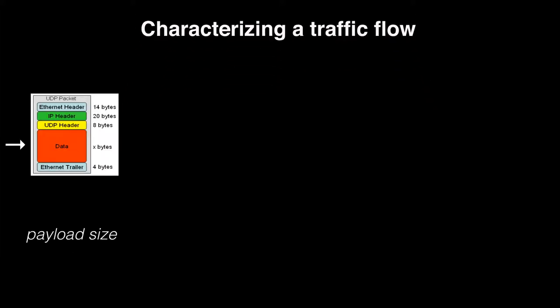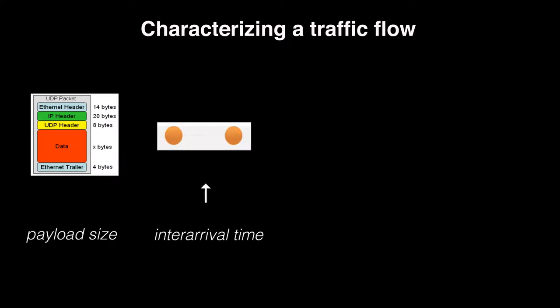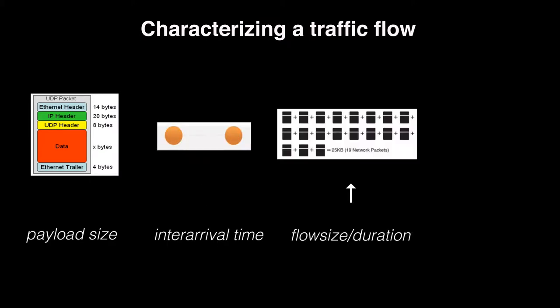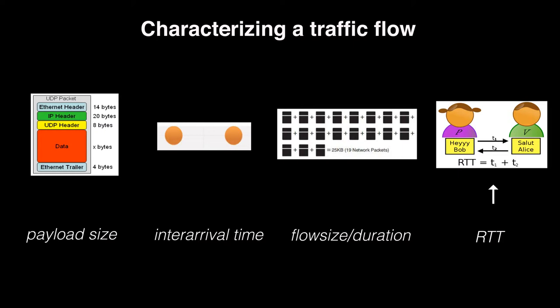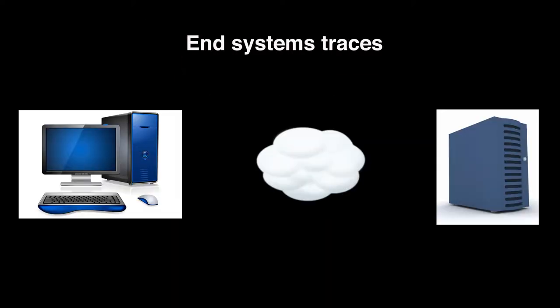Characterizing a traffic flow can be done in different ways. We use payload size, packet inter-arrival time, flow size, and duration for describing stream properties, while RTT is used to estimate connection response time. A simple way to study an application's traffic pattern is capturing all the data it sends and receives on an end system. Then we can easily characterize the flow according to the properties mentioned previously.